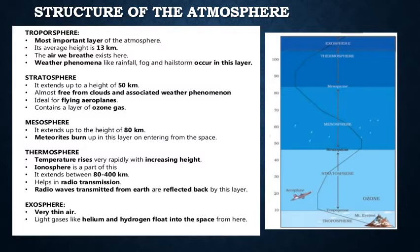Radio waves transmitted from earth are reflected back by this layer. The last layer is the exosphere. This is the uppermost layer of the atmosphere and has very thin air. Light gases like helium and hydrogen float into space from here.